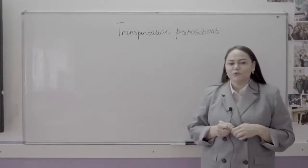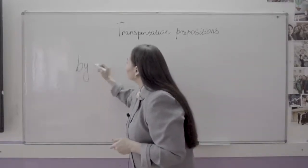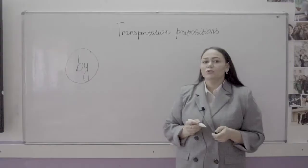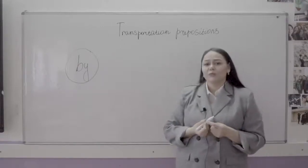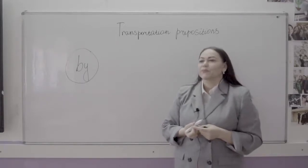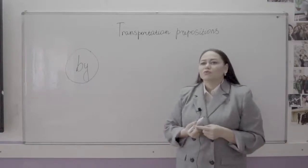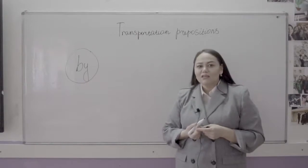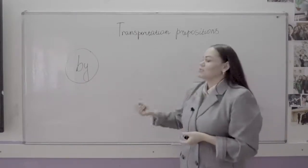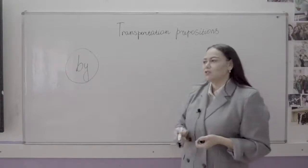The first preposition we are going to look at is 'by.' When do we usually use it? For example: How do you travel to Taraz? I travel to Taraz by bus. Or: How are you going to travel to London? I travel to London by plane, then by train, and last by car. Here, the first usage is that we use it with words in general — general statements about traveling.